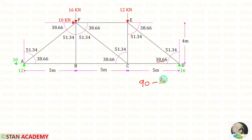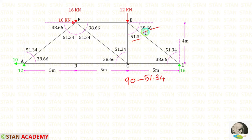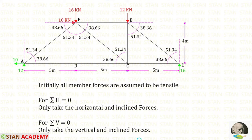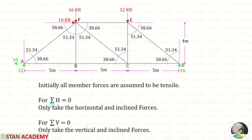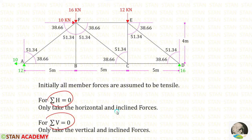The complementary angle is 90 minus 38.66, which gives 51.34 degrees. And 90 minus 51.34 gives 38.66 degrees. Now let us see the principles of method of joints. Initially all member forces are assumed to be tensile; if we get any negative value, that force is compressive. When we apply sigma H equals 0, we take horizontal and inclined forces. When we apply sigma V equals 0, we take vertical and inclined forces. In this analysis we are only going to use cos theta and not sin theta.